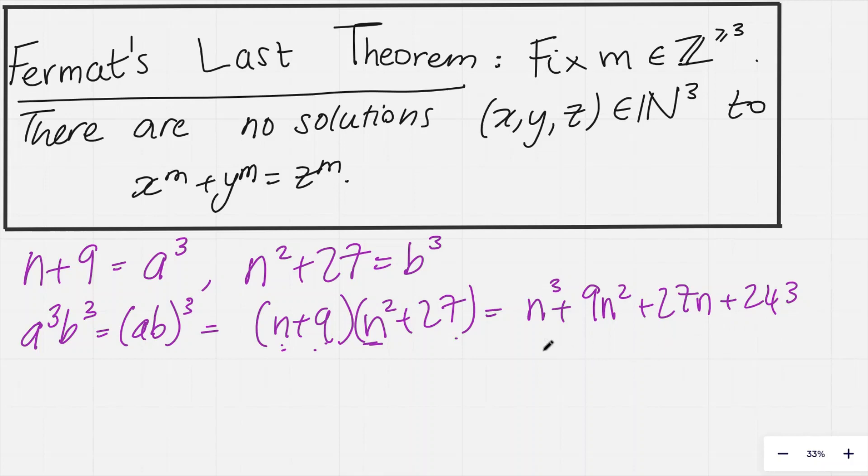And now I look at the first three terms here, and this looks awfully similar to what I get if I do n plus 3 cubed, because n plus 3 cubed is just n cubed plus 9n squared plus 27n plus 3 cubed, which is 27. So, it's almost the same as n plus 3 cubed, but I've got 243 minus 27 added on, and this is just 216.